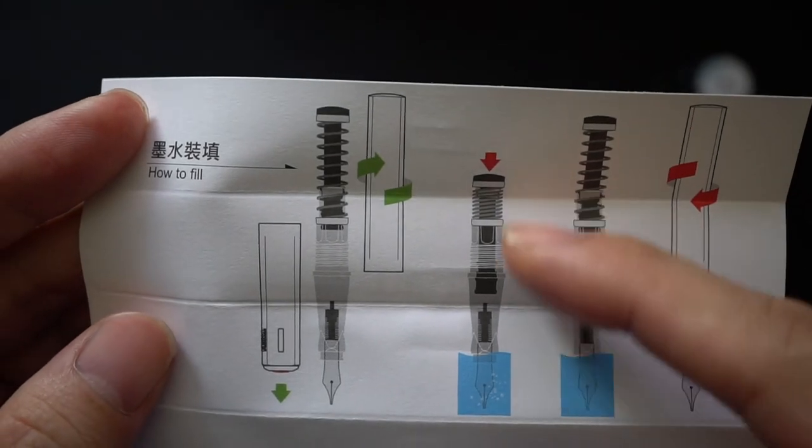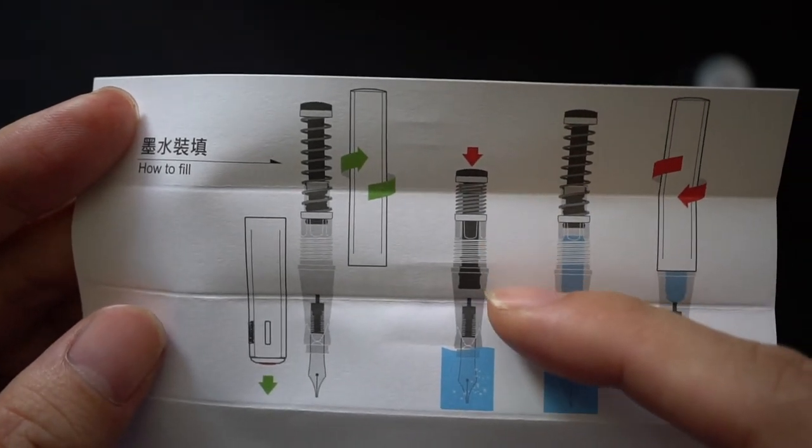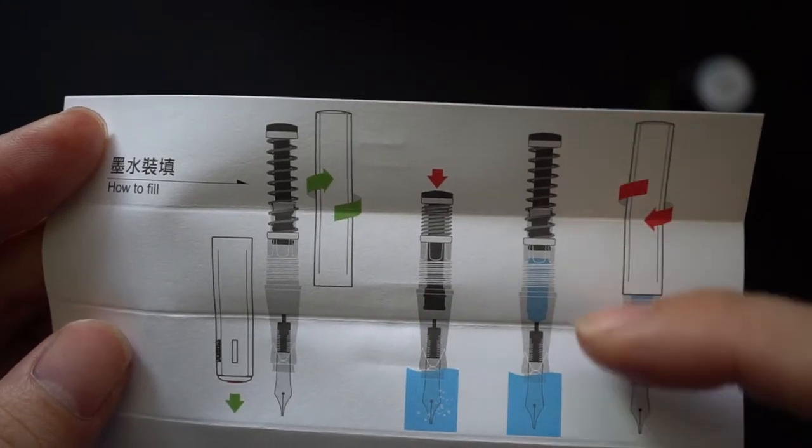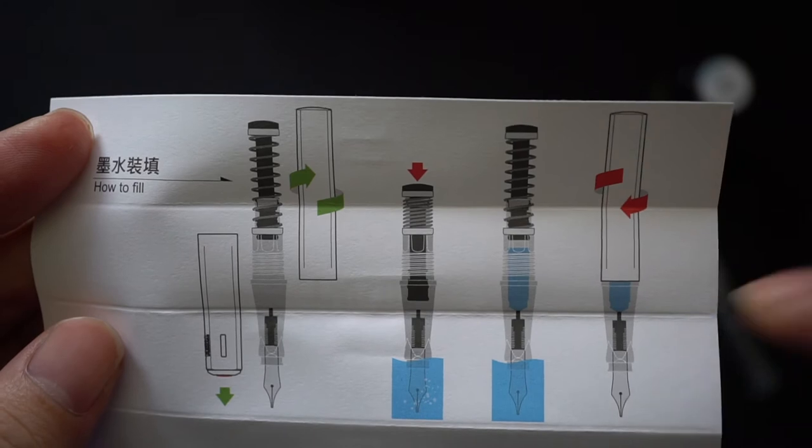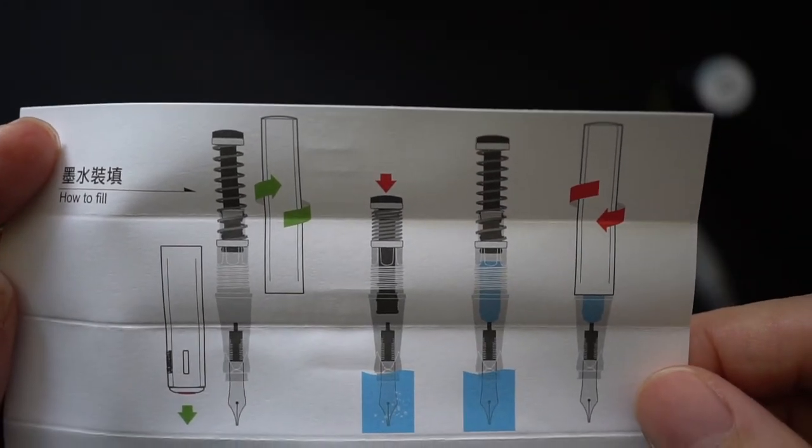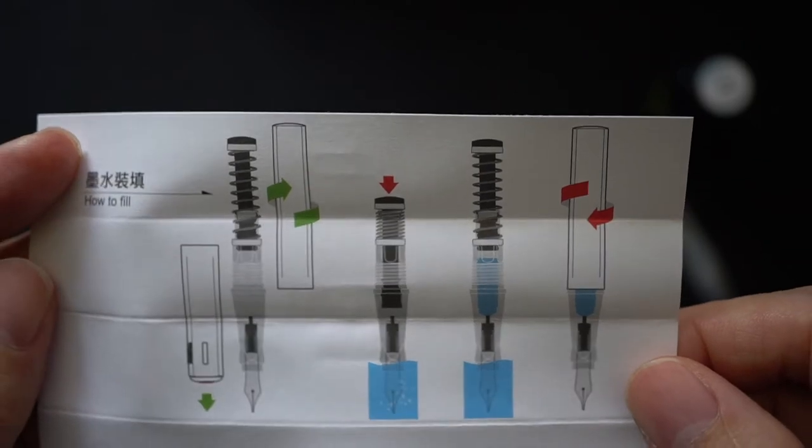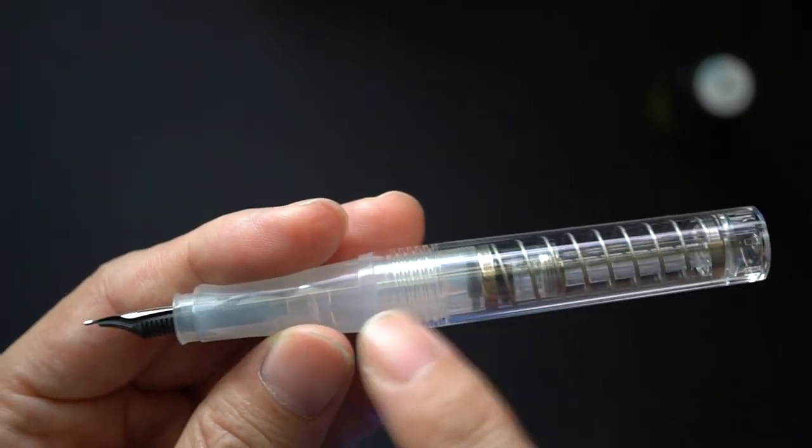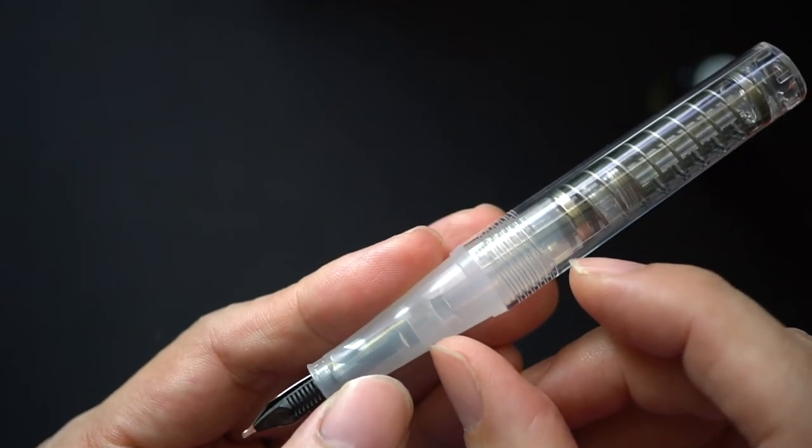Then you depress the plunger mechanism into ink, and once you let go of the plunger mechanism, the ink will be sucked up into the ink reservoir. Approximately from what I read on the internet, you can put roughly one and a half milliliter if you manage to be very skillful to get it into this portion of the pen.